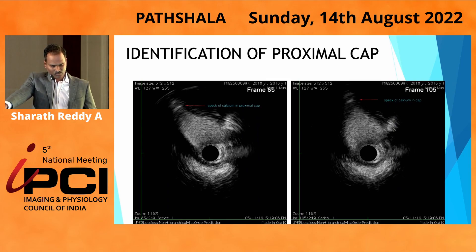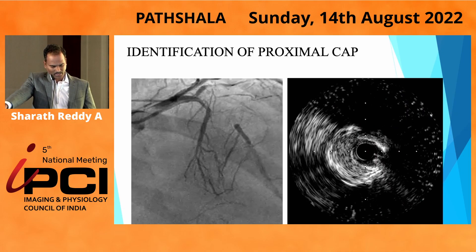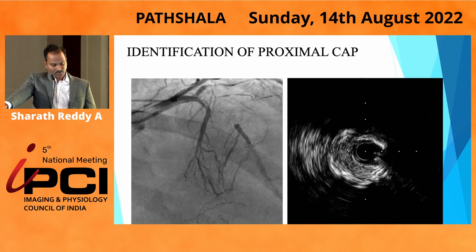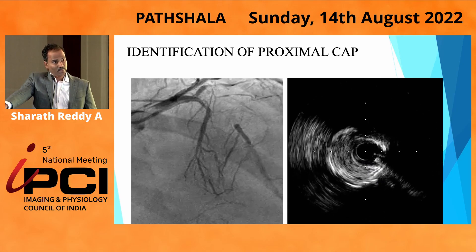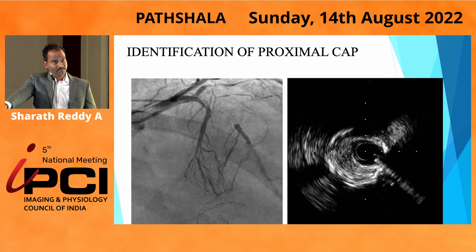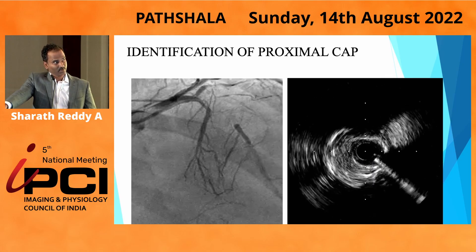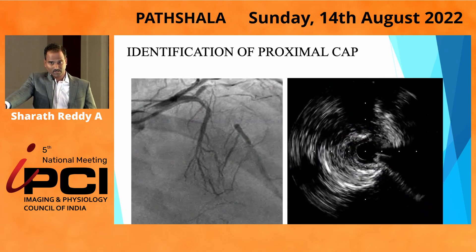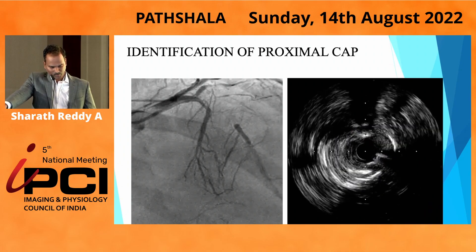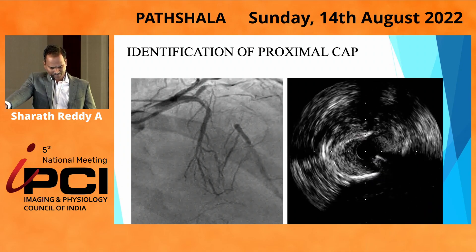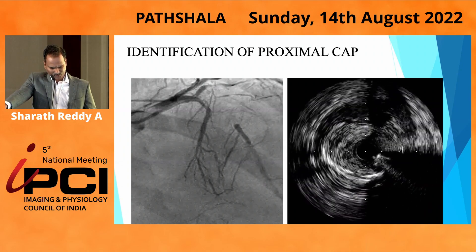In that case, Gaia didn't work, so we had to move on to the Hornet wire. Sometimes, despite IVUS from the side branch, you are not able to make it out — when there is severe calcium, it is very difficult to see where the proximal cap and vessel are. In those cases, you have to go for alternative techniques.